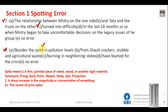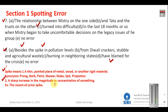Question number eight: 'Besides the spike in pollution level from Diwali crackers, stubble and agricultural waste burning in neighboring states have blamed for the crisis.' These things — Diwali crackers, stubble and agricultural waste — have been blamed for the crisis. So in place of 'have' you have to say 'have been'. The word 'spike' means a sharp increase and can be used as both a noun and a verb — a sharp increase in the magnitude or concentration of something.